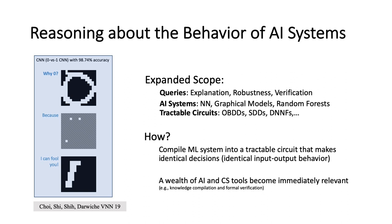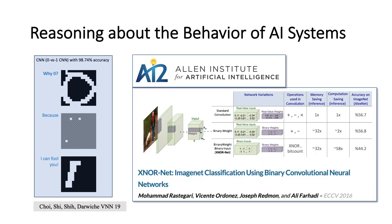As an example, we compiled a neural network for telling zero versus one digits - it has around 98.74% accuracy. For the image at the top, it classifies it as zero. When you ask why, our PI explanations come back with three pixels that, if fixed to white, will cause this neural network to always classify the input as zero regardless of anything else. This is one of the insights you get from these things. Binarized neural networks are gathering attention for efficiency and space reasons, but we also like this work because it makes it easy to compile and reason about.